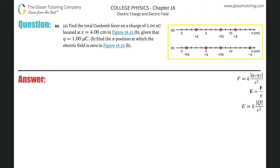Number 44, letter A. Find the total Coulomb force on a charge of two nanocoulombs located at four centimeters in figure B, given that Q is equal to one microcoulomb. Here's figure B. We're going to look at X equals four centimeters, so that looks like a point right about here.